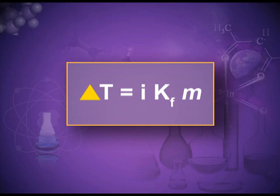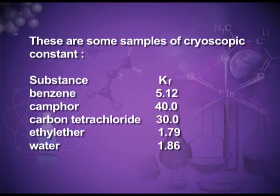Mathematically, ΔT = i·Kf·m. Delta T is the depression in freezing point, i is the van't Hoff factor, Kf is the molal depression freezing point constant, also known as the cryoscopic constant, with units Kelvin·kg/mol — similar to the ebullioscopic constant. Small m is molality — the number of solute particles dissolved in 1 kg of solvent. Some sample cryoscopic constants: for benzene it is 5.12 K·kg/mol, for camphor it is 40, and for water it is 1.86. These values are usually given in numericals, but you should learn them for common solvents.